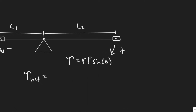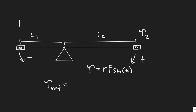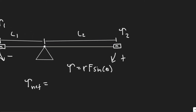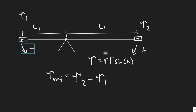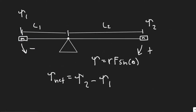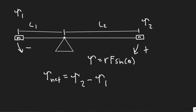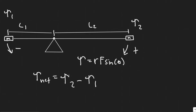Let's call this T2 and this T1. The net torque is going to be equal to T2 minus T1, because we're adding them up. T1 is going to make it go counterclockwise, so we make it negative. T2 is positive because it's going clockwise.